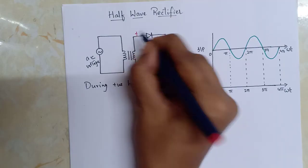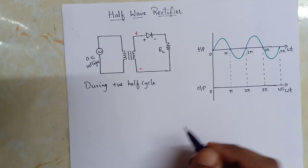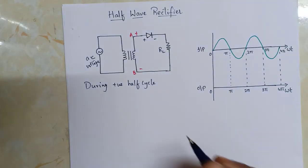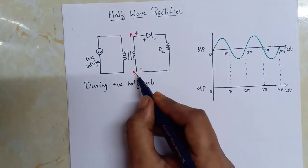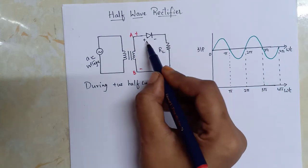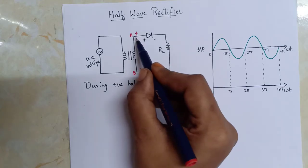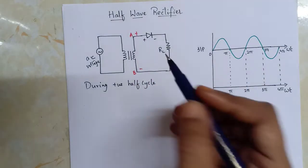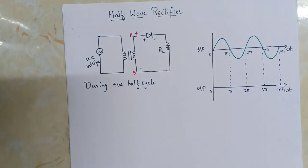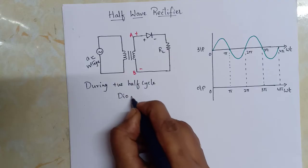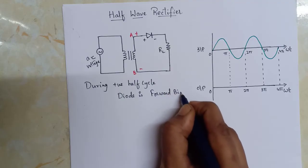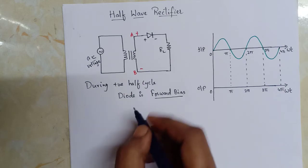During the positive half cycle, let us consider that the two ends of the secondary of the transformer are at positive and negative potentials respectively. If I call this end as A and this as B, then A is at positive potential and B is at negative potential. Observing the circuit connection, the positive of the diode is connected to the positive of the input voltage and the negative of the diode is connected to the negative of the input voltage. Therefore, in this condition the diode is in a forward bias state.